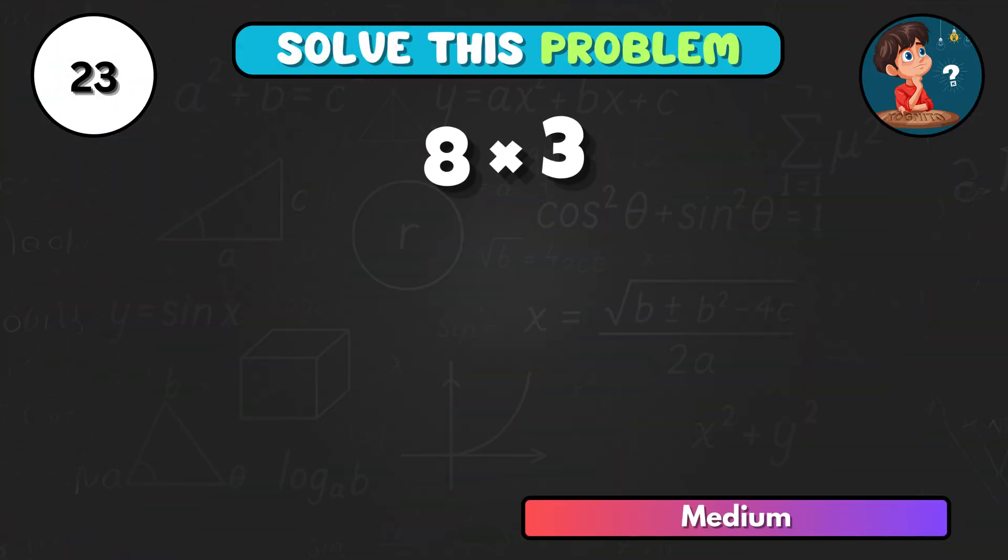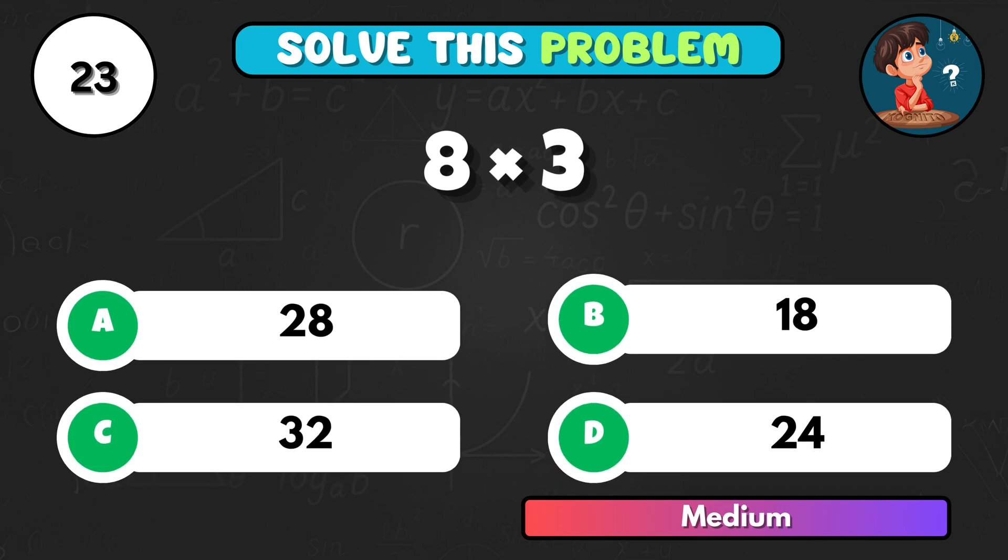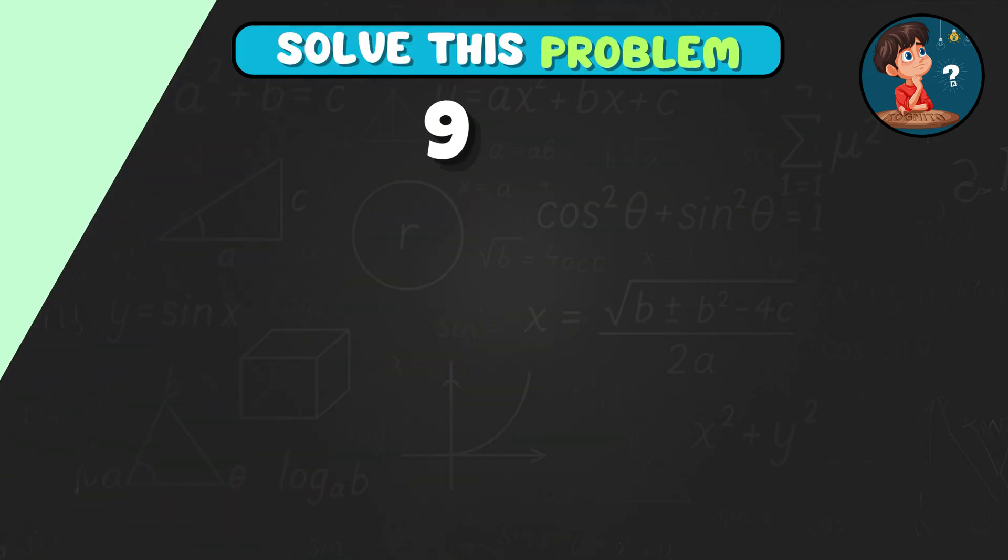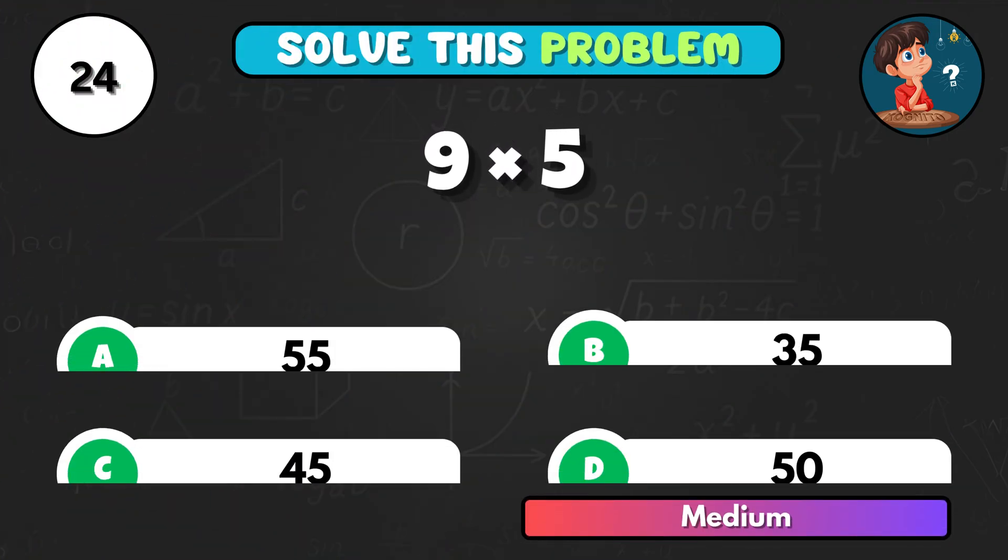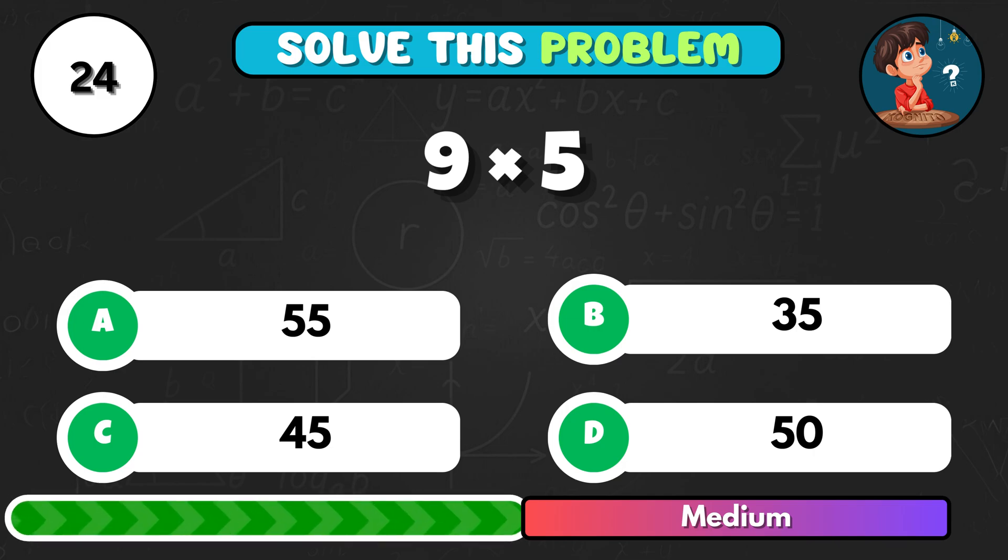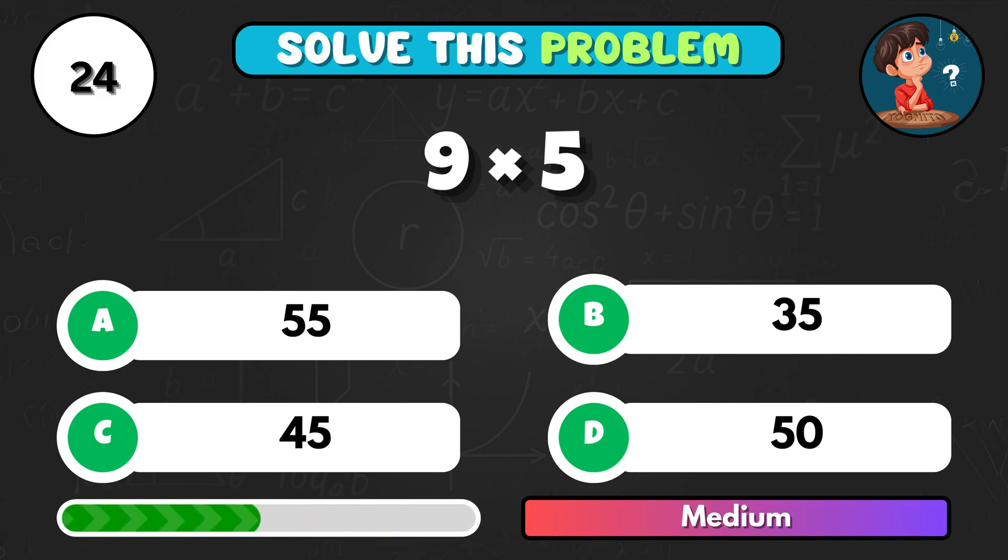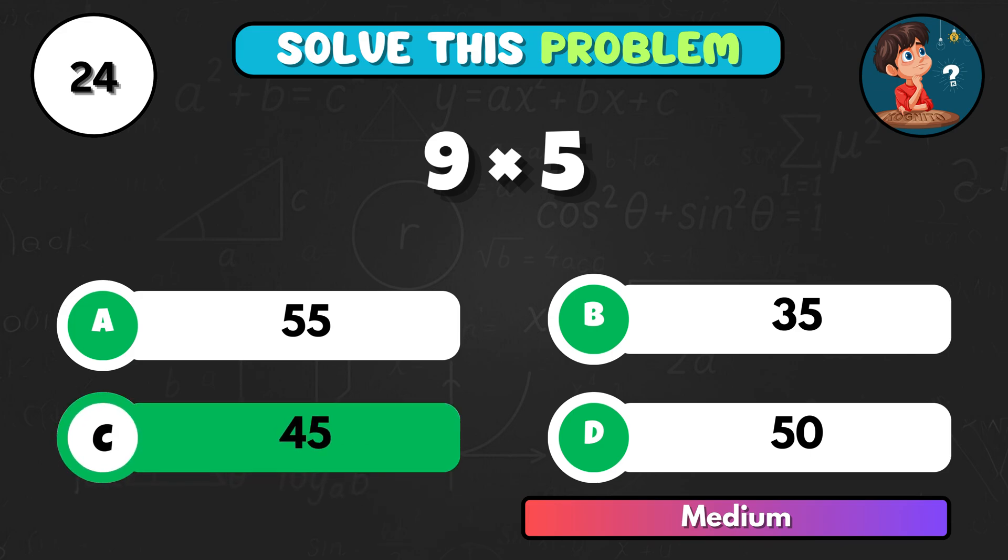Think quick. 8 times 3 equals... That gives D, 24. Here's one. 9 times 5. Guess fast. That's C, 45.